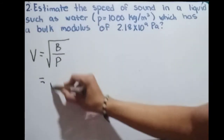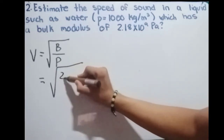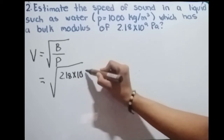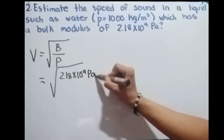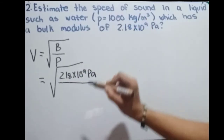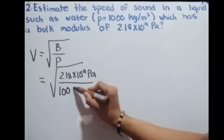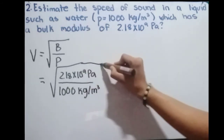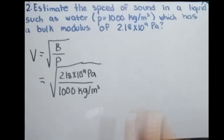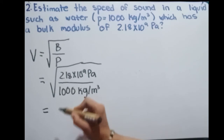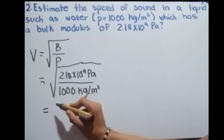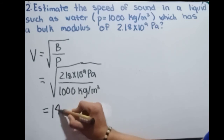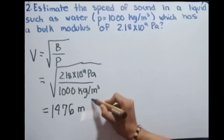We have a given bulk modulus of 2.18 times 10 raised to 9 pascals and a density of 1000 kilograms per cubic meter. Computing 2.18 times 10 raised to 9 over 1000 and taking the square root, we get the speed of sound in liquid, which is 1476 meters per second.